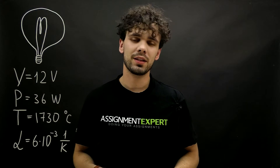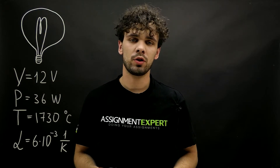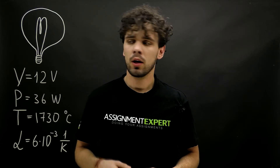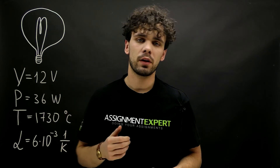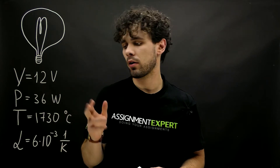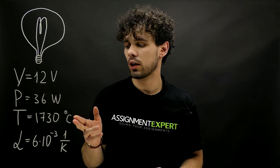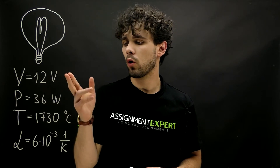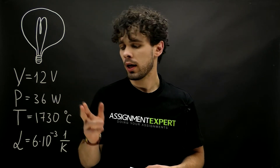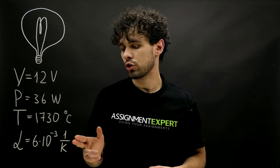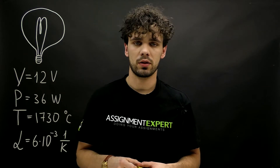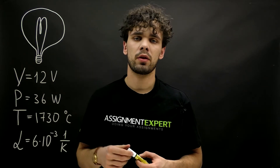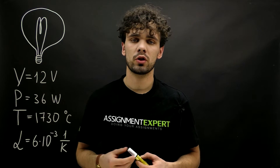Hello guys, this is a Simon expert and today we have a question from Astine. We have a lamp with a tungsten filament that operates at the temperature 730 degrees Celsius. We know the voltage and the power of this lamp and the temperature coefficient of resistance of tungsten. Let's find the resistance of this lamp at the temperature 20 degrees Celsius.